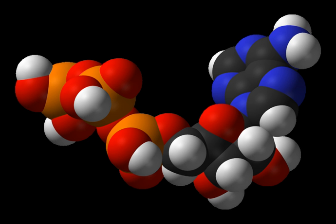Without oxygen, pyruvate is not metabolized by cellular respiration but undergoes a process of fermentation. The pyruvate is not transported into the mitochondrion, but remains in the cytoplasm, where it is converted to waste products that may be removed from the cell. This serves the purpose of oxidizing the electron carriers so that they can perform glycolysis again and removing the excess pyruvate. Fermentation oxidizes NADH to NAD+ so it can be reused in glycolysis. In the absence of oxygen, fermentation prevents the buildup of NADH in the cytoplasm and provides NAD+ for glycolysis.